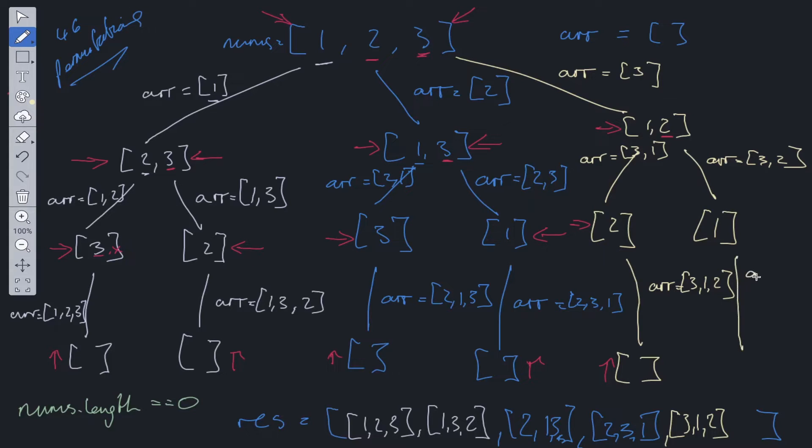We're left with one. We take one, so the array equals three, two, one. And we're left with an empty array. So we can push that in here. Three, two, one.